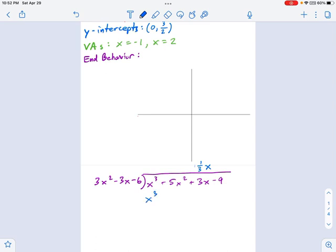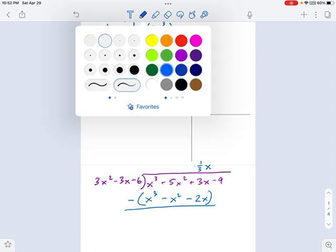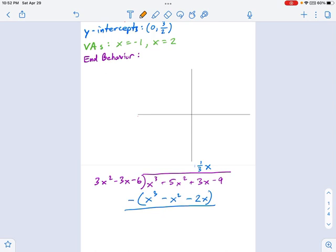One third x times negative 3x is going to be negative x squared. And then one third x times negative 6 is going to be negative 2x. So what I like to do at this point is put a parentheses around that whole thing to remind me that when I do the subtraction, I'm subtracting everything in the parentheses. Some other folks like to change the signs on each one of these things and add them up. We can do that. I just change all these signs to negative x cubed, positive x squared, positive 2x. I'm just going to go ahead and subtract.